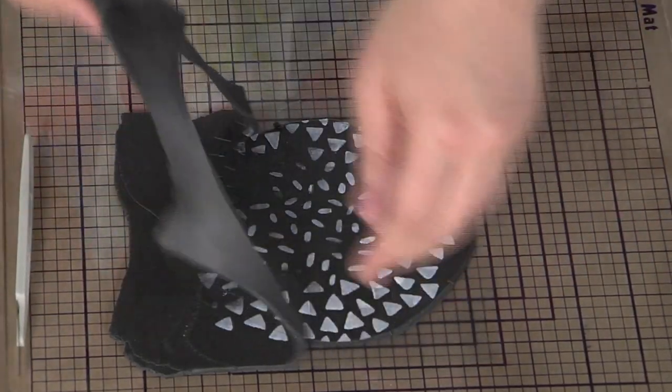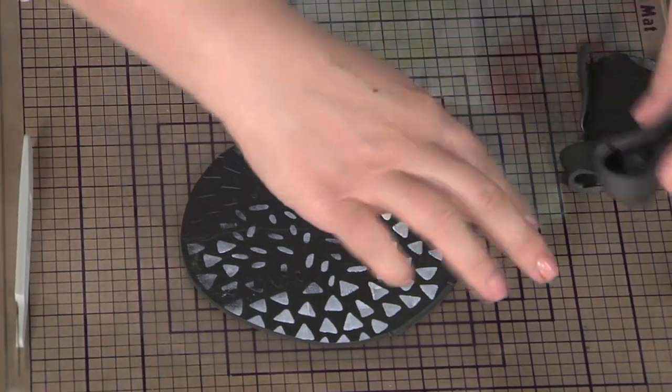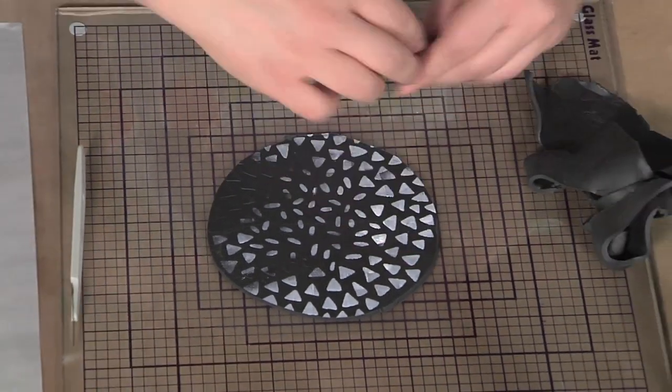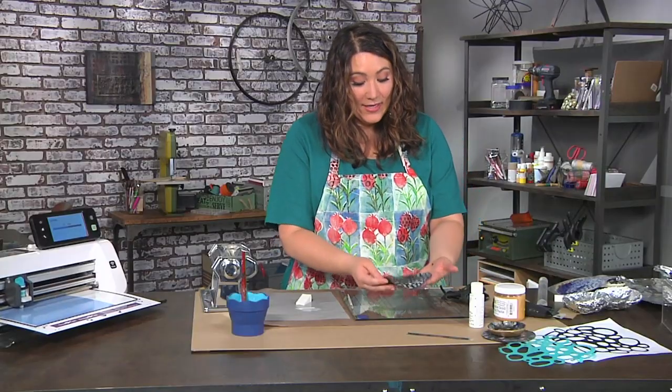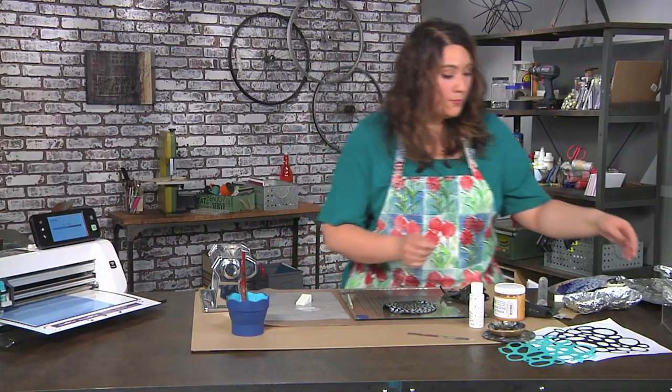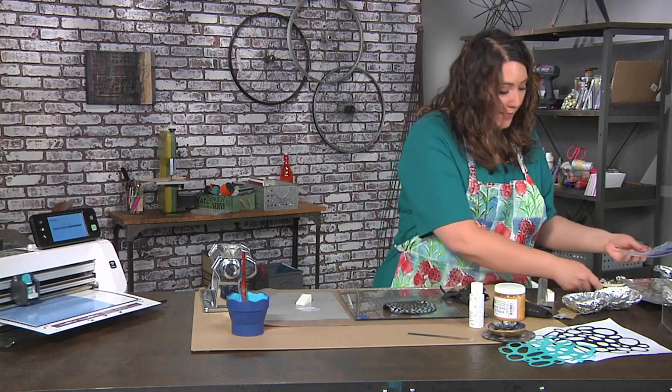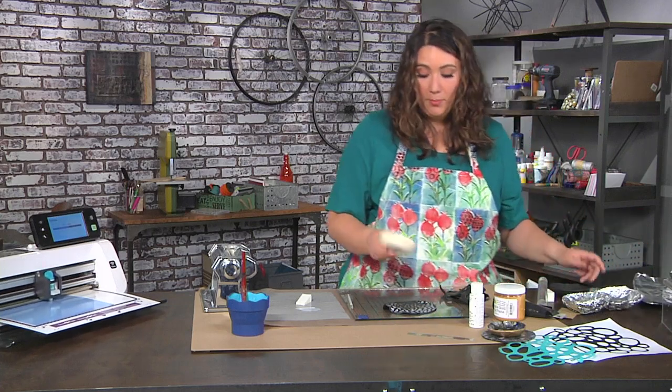Peel away the excess clay just like this. And then you're going to carefully peel it off. Now the next step is we need to put this in a mold. So I have a bowl that I like. Just a little pinch pot.